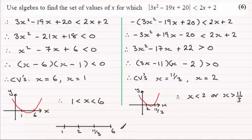But we know that we've got to have x between 1 and 6, but at the same time it must be less than 2 but greater than 11/3. So that means it's just restricted to this region in here between 1 and 2 and between 11/3 and 6.